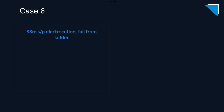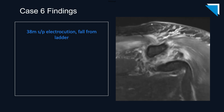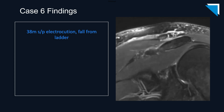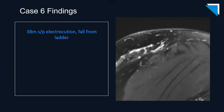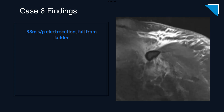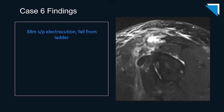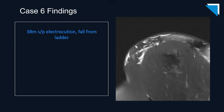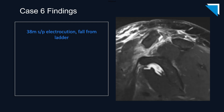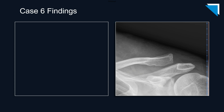Our last patient is a 38-year-old man status post electrocution and fall from a ladder — he's having a terrible day. We begin with a single plain radiograph, followed by an MRI. These are coronal fluid-sensitive images, and here is the sagittal fluid-sensitive sequence. Returning to our plain radiograph to review the findings.